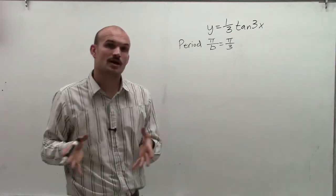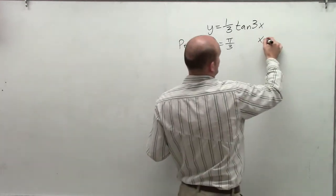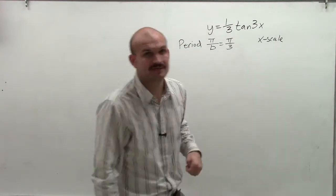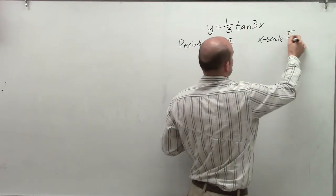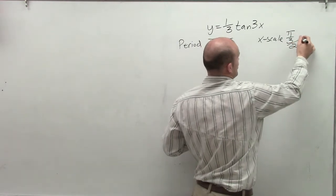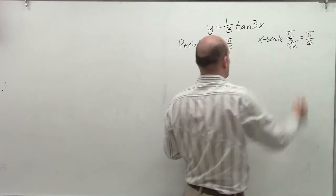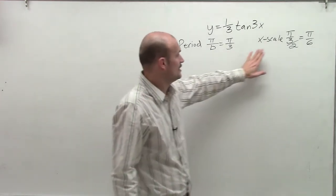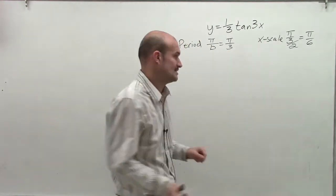Then we're going to look at our critical points, or our x scale. Remember, our x scale for sine and cosine was divided by 4. Now we're only going to divide our x scale by 2. So take pi thirds divided by 2, which equals pi over 6. Therefore, I know my period is going to be pi thirds, and my x scale is going to be pi over 6.